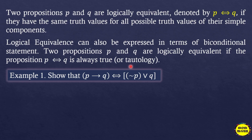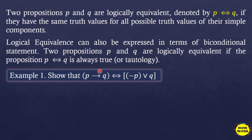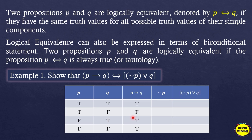Two propositions will be logically equivalent only when their truth values are the same — equal truth values. For example, 'if p then q' is a conditional statement. It should be equivalent to 'not p or q' — that is a disjunction. We'll construct a truth table to compare and verify that the truth values of these two statements are equal.